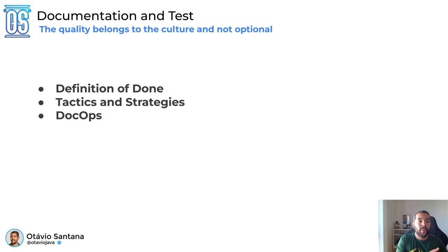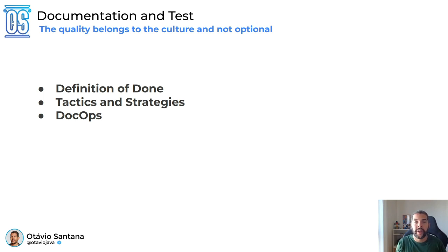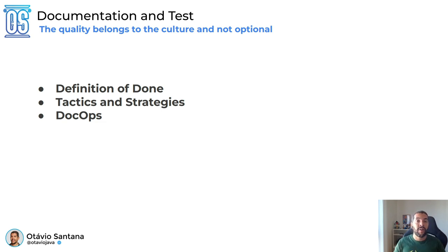Documentation and tests both have tactics and strategy around them. On the code design level, you need to document your repository; on the strategic level, you should document the architecture. Everything should be as accessible as possible, for example by exploring documentation ops, or doc ops.